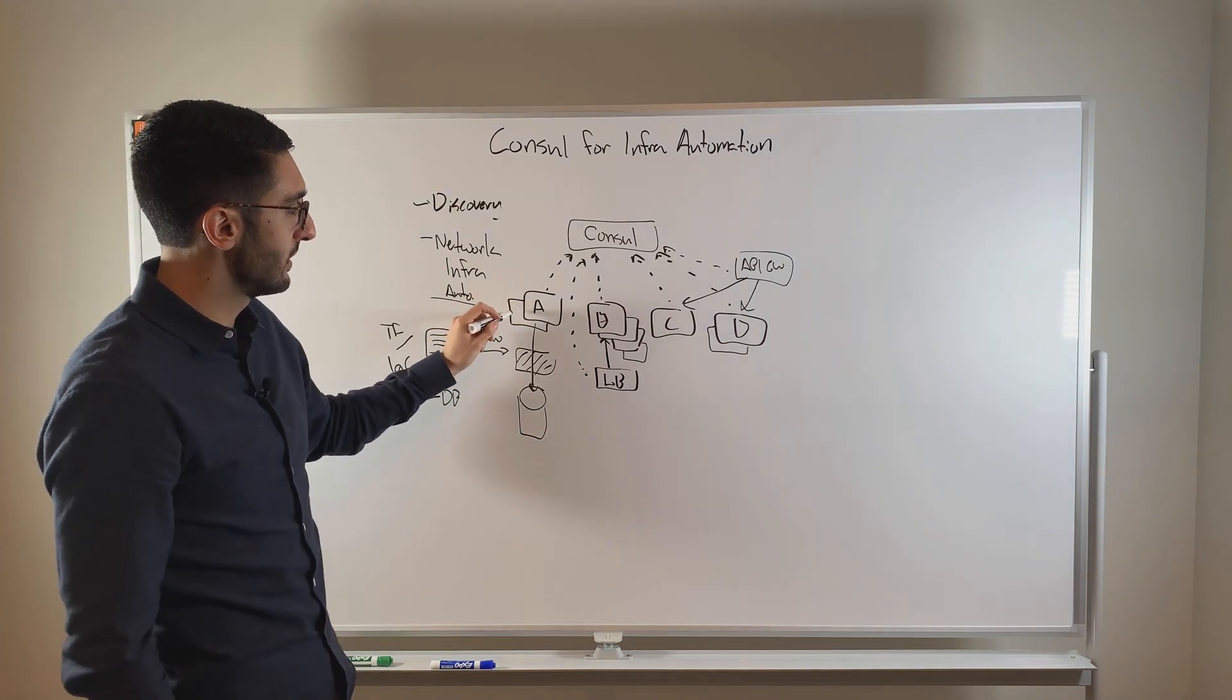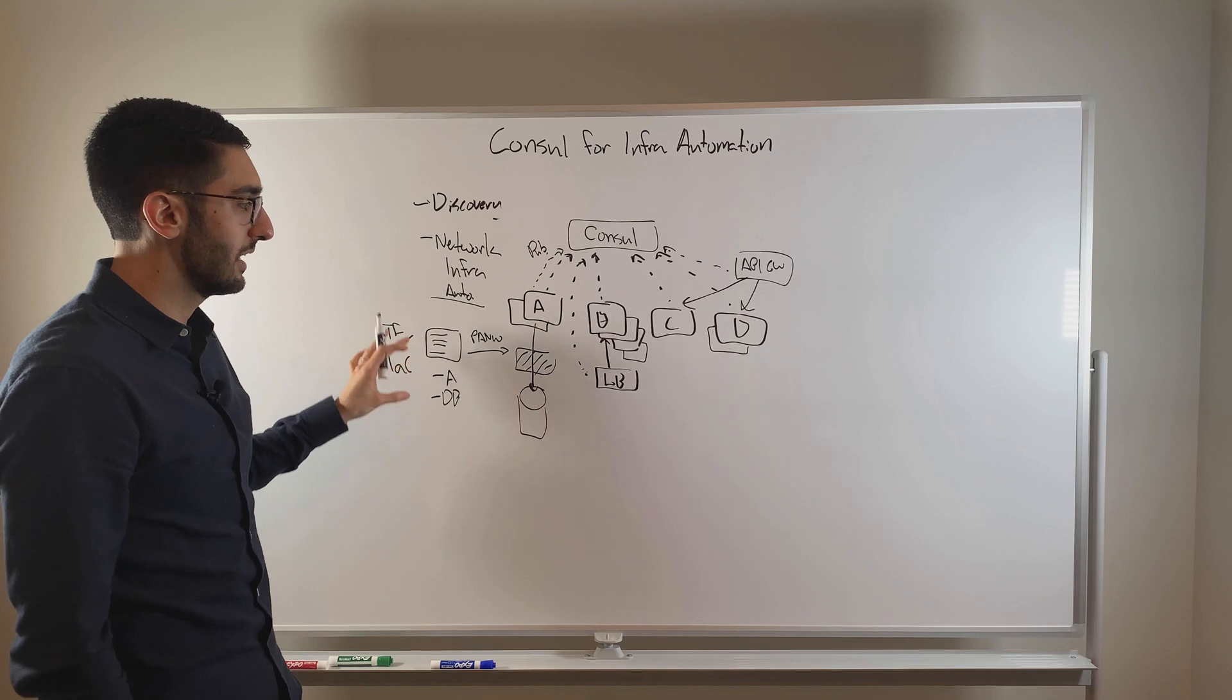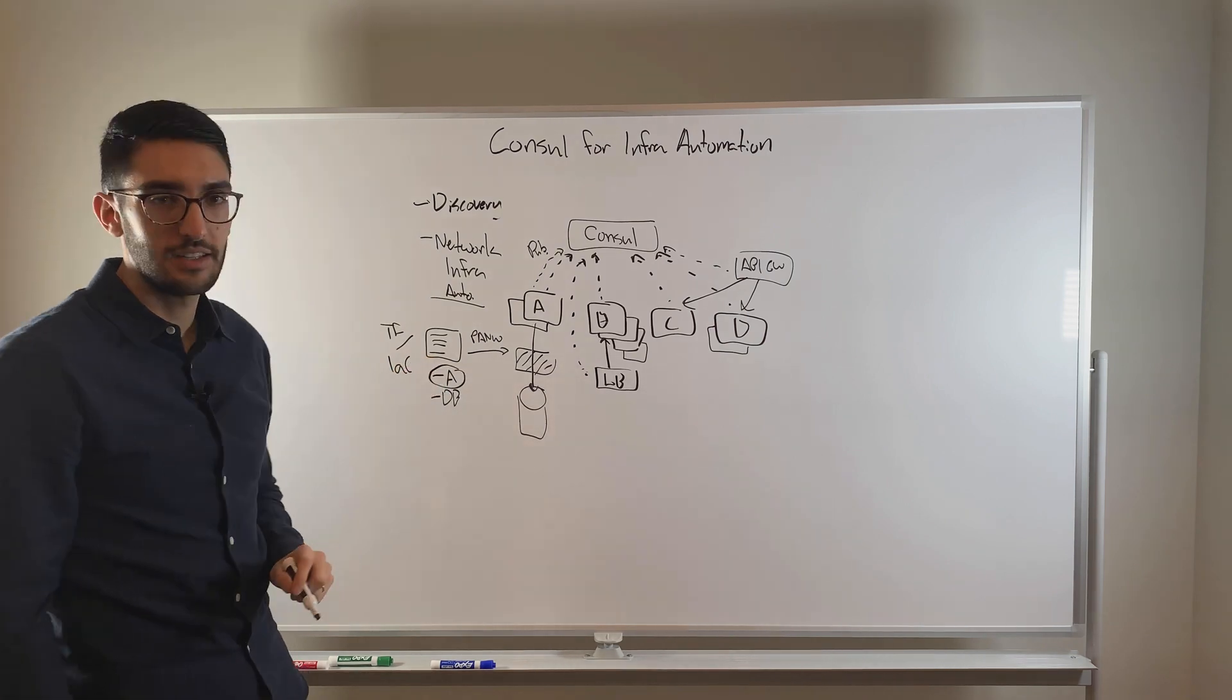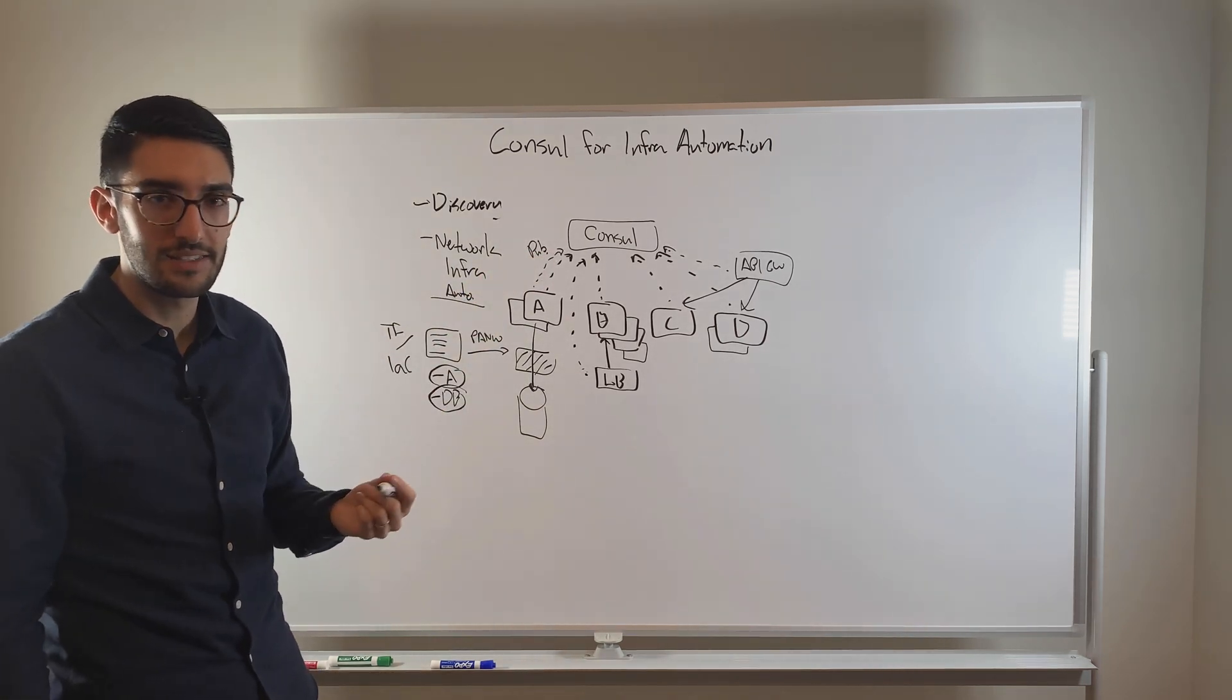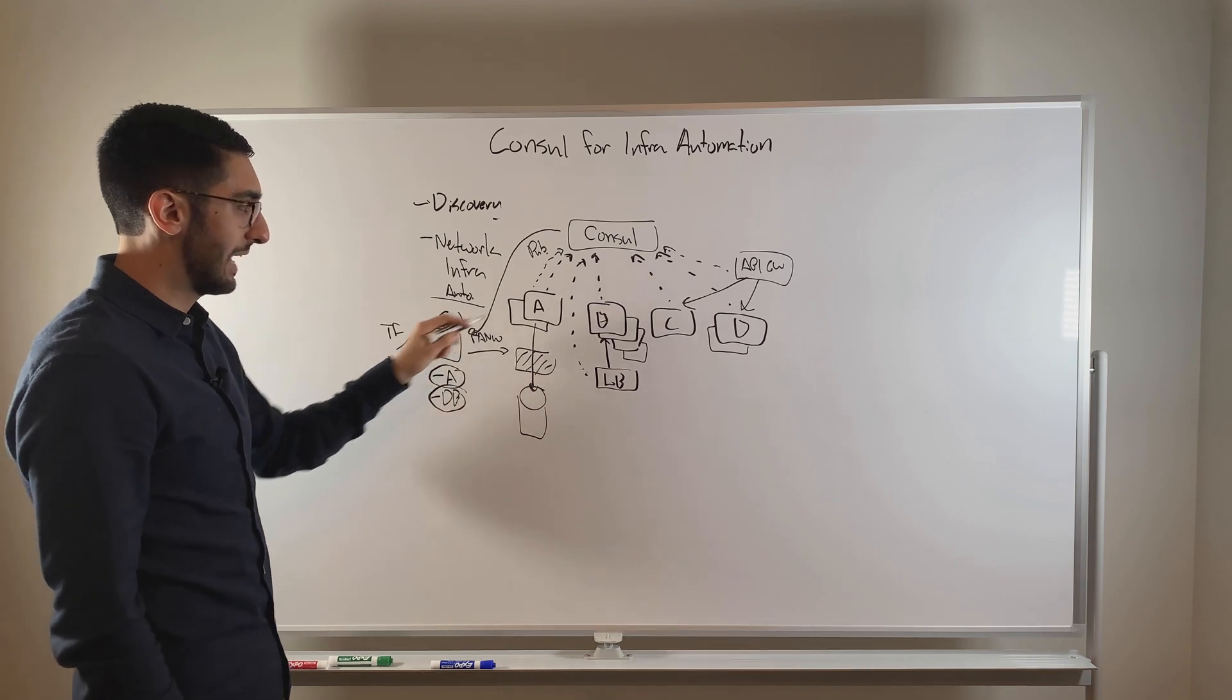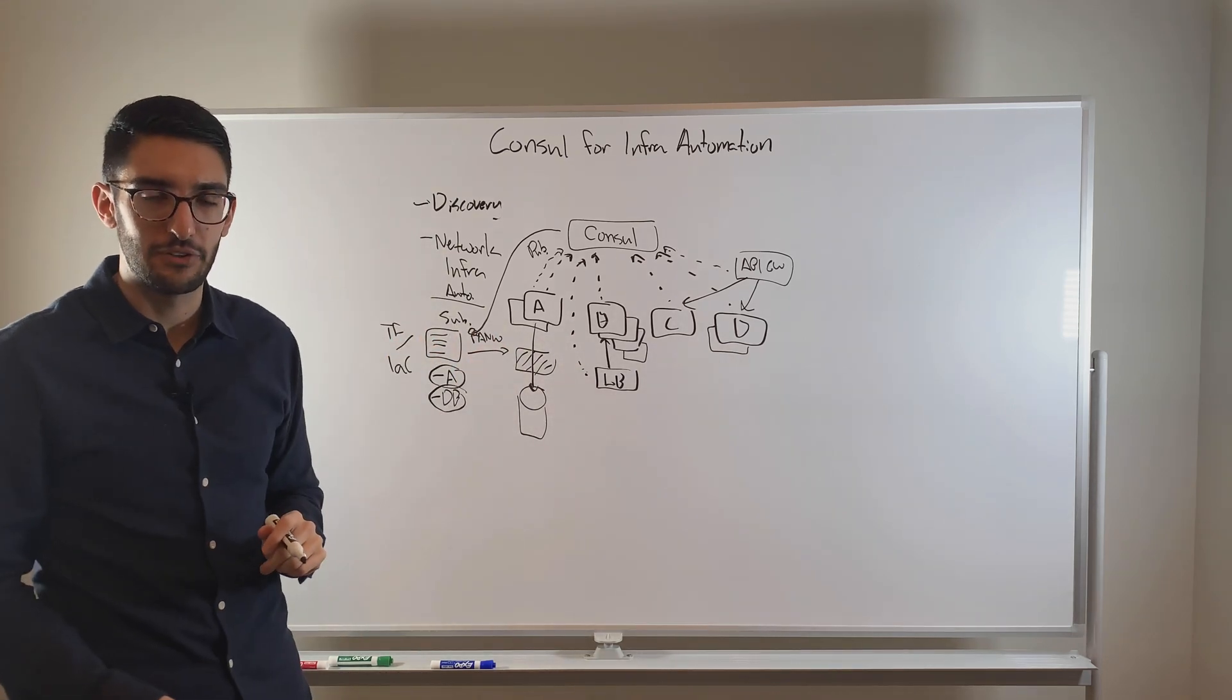And so then the way this works is it's a publisher subscriber relationship. When these services, new instance A comes up, it's registering with Consul, publishing the fact that there's a new instance of A. Now, this Terraform snippet, we configure this using what we call the Consul Terraform Sync agent. It's going to now look and say, I'm subscribed to the changes in service A or to service database. And so the moment this gets published that there's a new instance of A, it triggers this subscription. So there's a subscription that gets triggered. Before you only had this one instance of A, now there's a second IP.